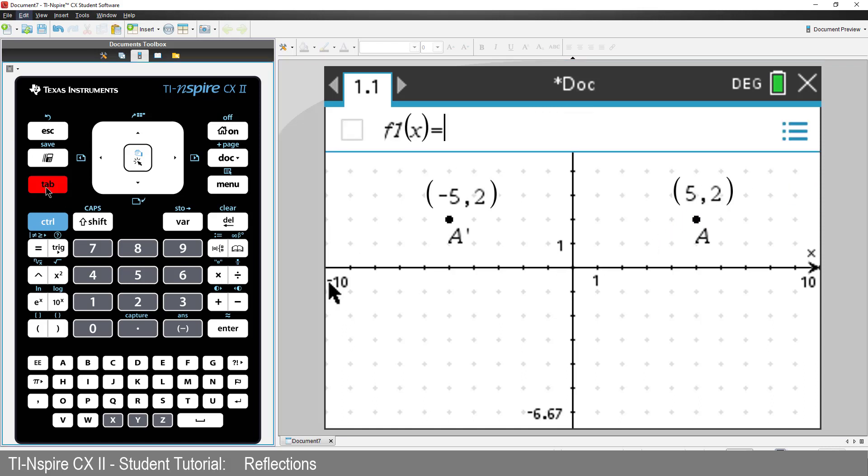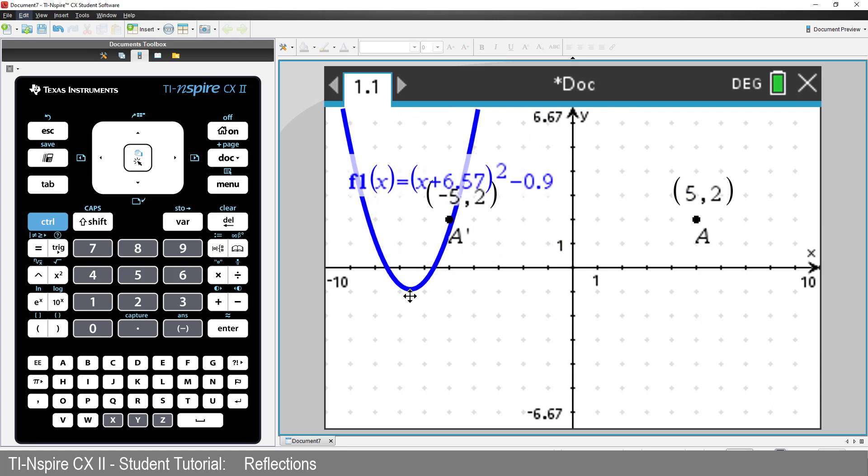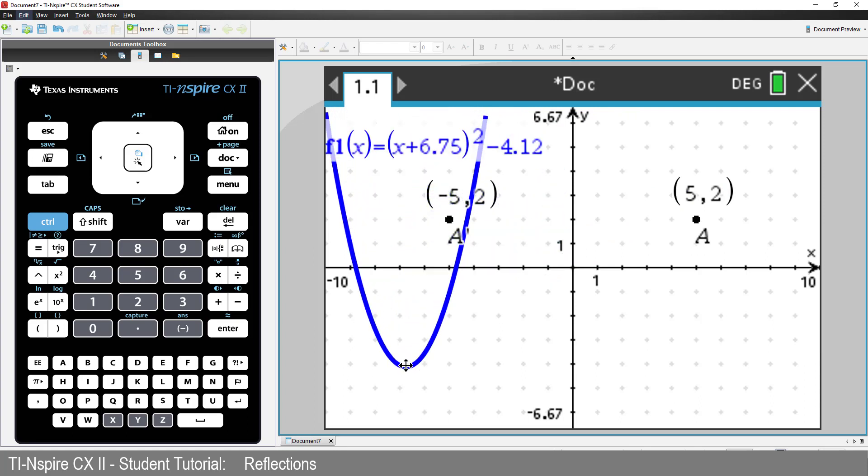Now let's graph a parabola. Enter the equation for f1 as x squared. Move the mouse over the turning point. When the mouse changes to a set of crosshairs, click and hold the mouse pad. Now swipe your fingers across the mouse pad to move the graph. Place the vertex or turning point of the parabola in the third quadrant, down in the bottom left there.